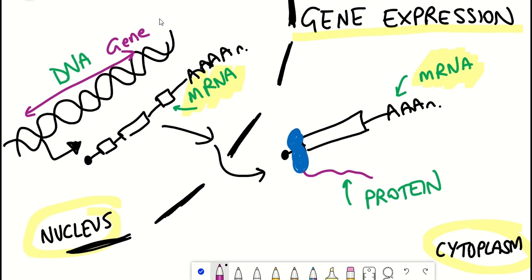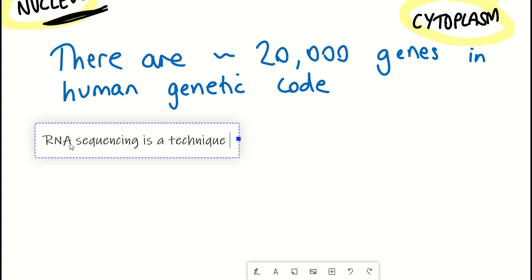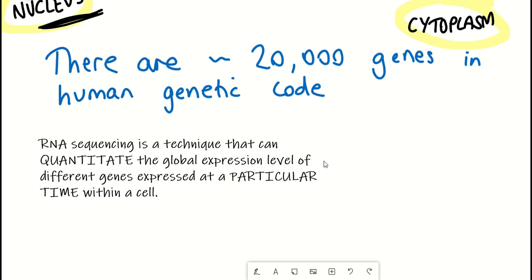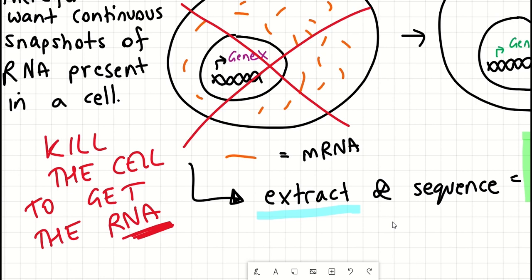So if a gene is being transcribed, the level of RNA for that gene is going to increase. RNA sequencing, then, is a technique that can quantitate the global expression level of different genes within a cell. However, in order to extract RNA from cells to sequence it, you kind of have to kill the cells in the process. This means we only get a snapshot of the genes expressed in a cell at a particular time.